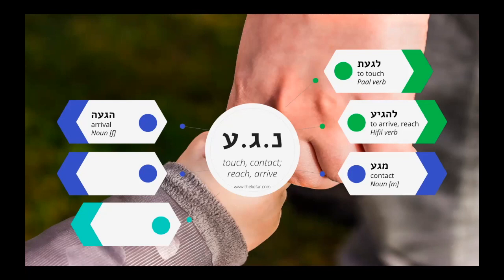There's haga'ah, a feminine noun that means arrival, related to lehagiyah — to arrive and to reach. And we also have negi'ah, a feminine noun that means touch or touching. You may have heard this in the phrase shomer negi'ah. Someone who is shomer or shomeret negi'ah is someone who doesn't make physical contact with somebody of the opposite sex, generally outside of the immediate family. And finally, we have the adverb benoge'ah, used with the preposition le, so benoge'ah le, meaning regarding or in regards to.